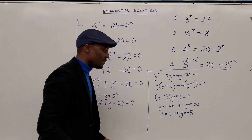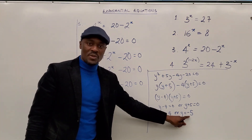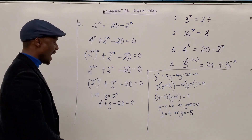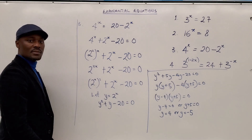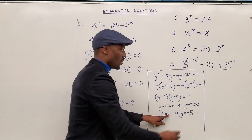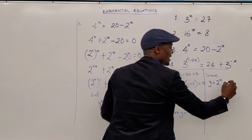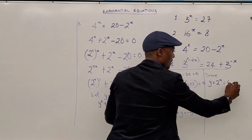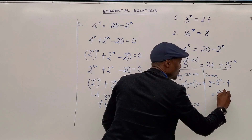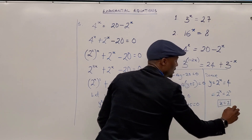These are the two options. However, because this is a negative number and we're dealing with 2 raised to a power, you just ignore the negative answer — negative values won't work. So now we know y equals 4. Remember we said y equals 2 to the x. So since y equals 2 to the x and y equals 4, you say 2 to the x equals 2 to the 2, and x equals 2. That's how you solve that.